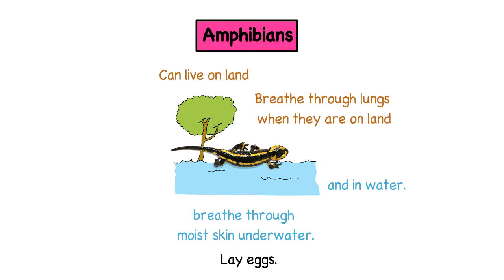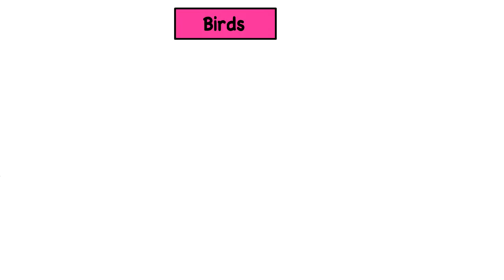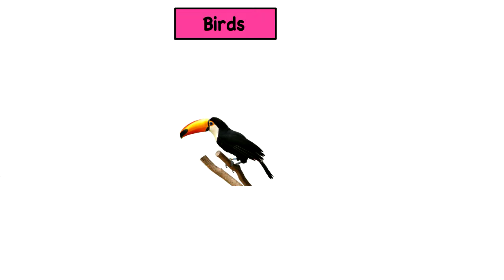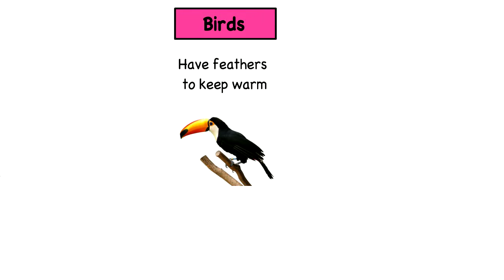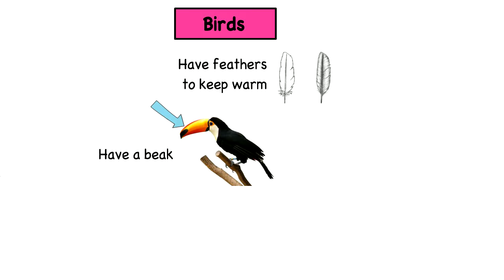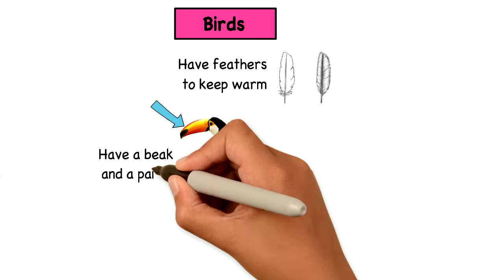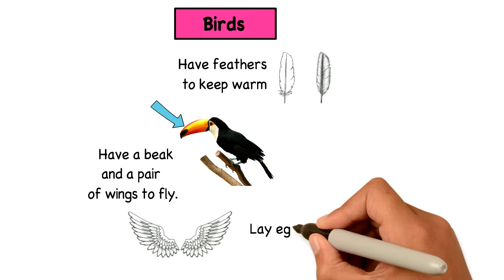Birds. They have feathers to keep them warm. They also have a beak and a pair of wings to fly. They lay eggs.